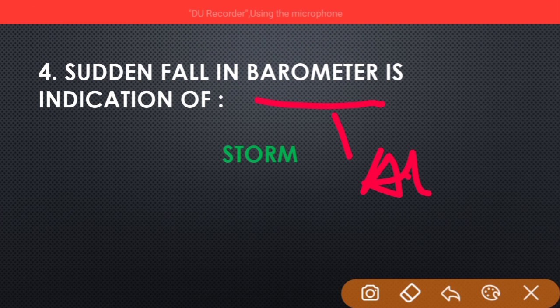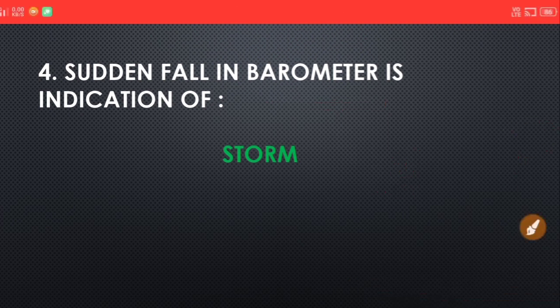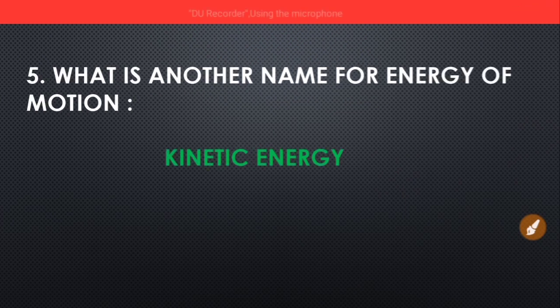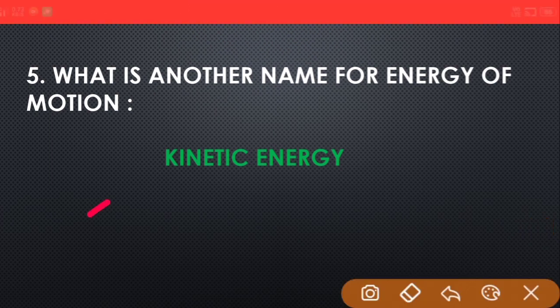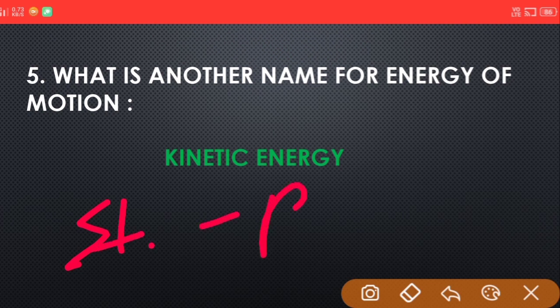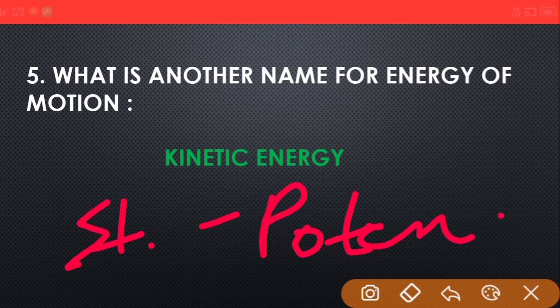Fifth, what is another name for energy of motion? Answer: kinetic energy. And stored energy? Stored energy is potential energy. Energy of motion is kinetic energy, stored energy is potential energy.